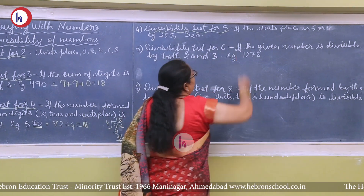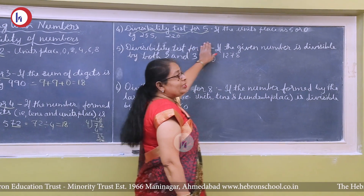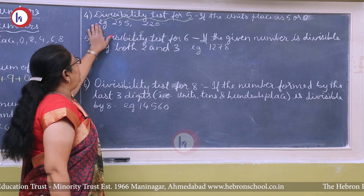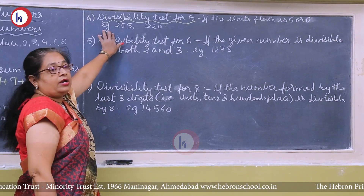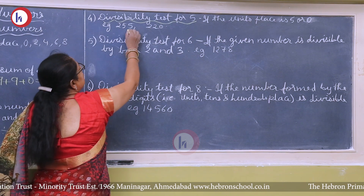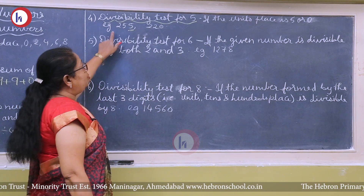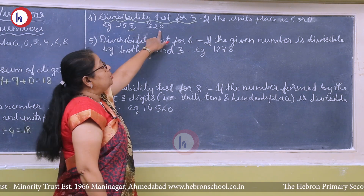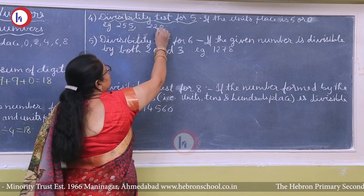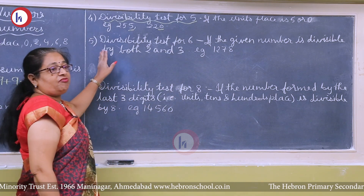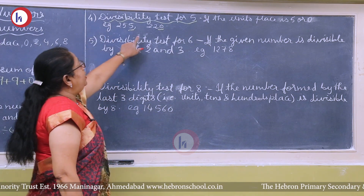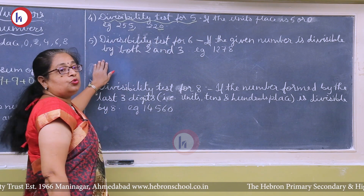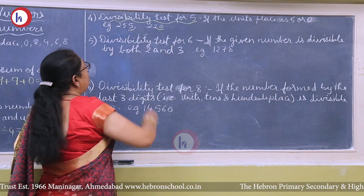Next, the divisibility test for 5: any number which has the unit place as either 5 or 0 is divisible by 5. For example, 255 has unit place 5, so it is divisible by 5. Another example: 220 has unit place 0, so 220 is also divisible by 5.